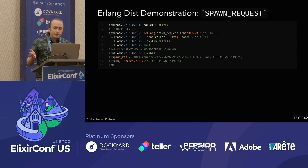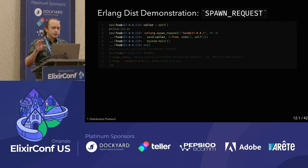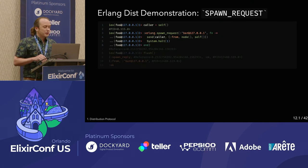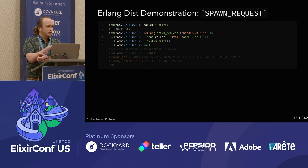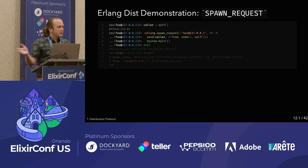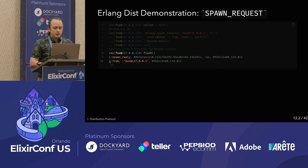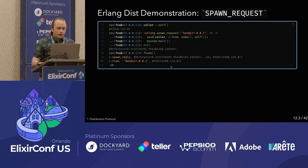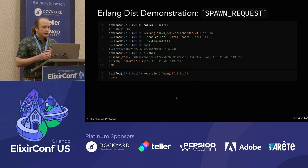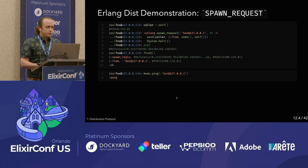For a third example — spawn request: we assign self to caller and do a spawn request on bar from the foo node, sending back to the caller from node self to verify we're running on the other node. The last thing we do is halt, which kills the bar node. If we flush, we see a spawn reply with the PID, and the PID matches the sent message. But the bad news is the bar node is now dead — it just shut down immediately.